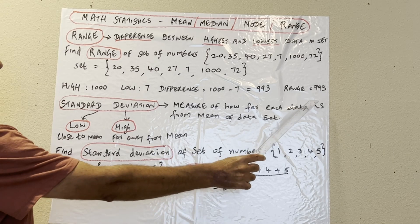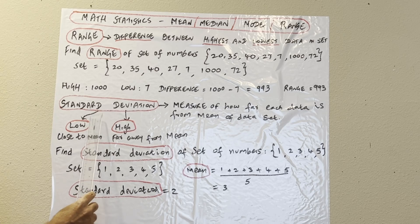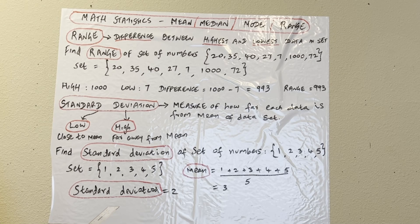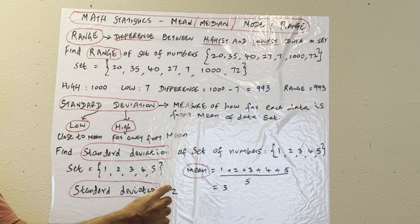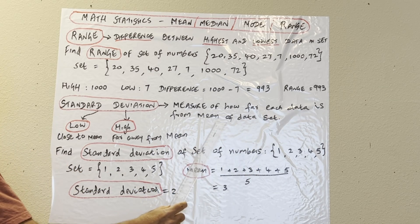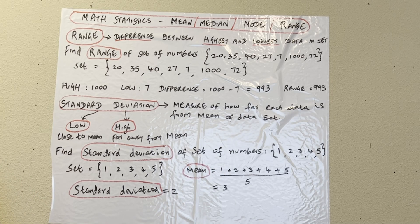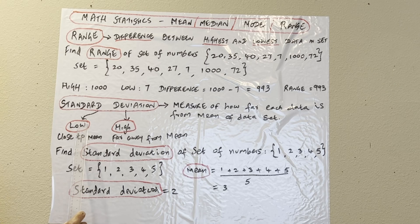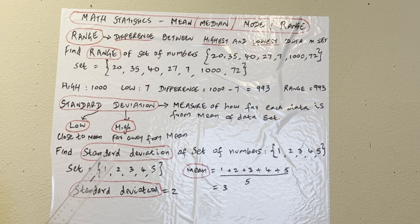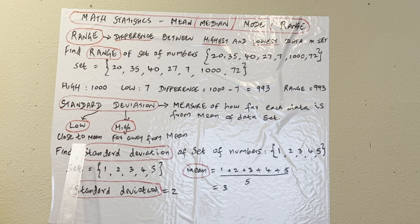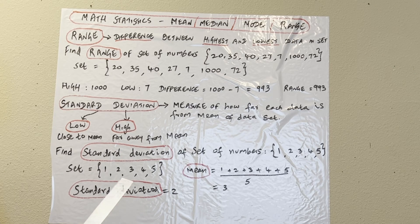Standard deviation — as the name suggests — measures how much the deviation is from a standard set of numbers. It's the measure of how far each data point is from the mean of the data set. First we have to find the mean of the set. There are two types: low and high standard deviation. Low deviation means data is close to the mean; high deviation means data is far away from the mean.